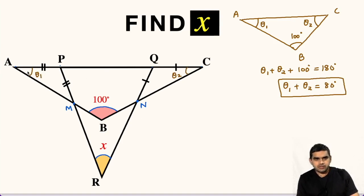Now focus on triangle APM. In this triangle, AP equals PM, so it is an isosceles triangle. Therefore, this angle will also be theta 1.